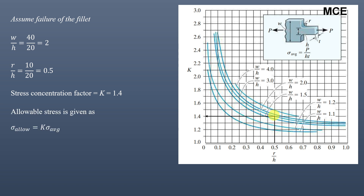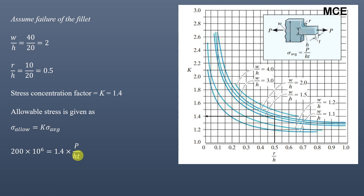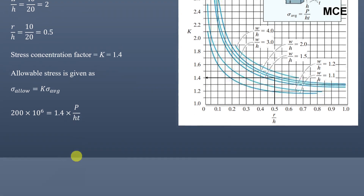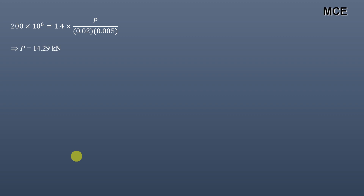The allowable stress is given as K times the average stress. The average stress at the fillet portion equals load P divided by width h times thickness t. The allowable stress is 200 MPa (200 × 10⁶ Pa), K = 1.4, h = 20 mm, and t = 5 mm. Putting in the values and solving for P, we get P = 14.29 kN. This is the maximum allowable load such that failure at the fillet will not occur.